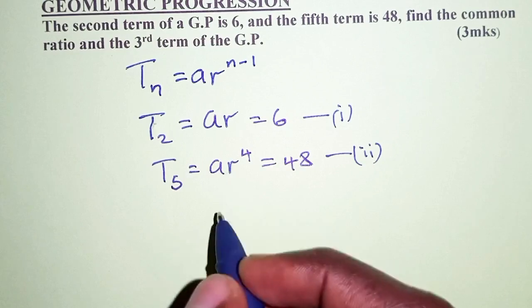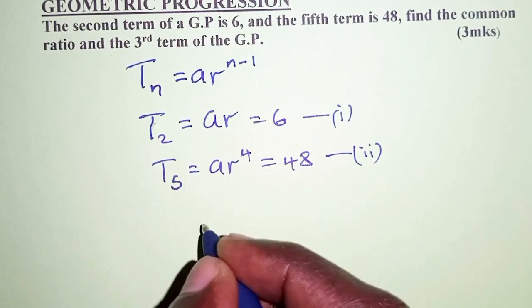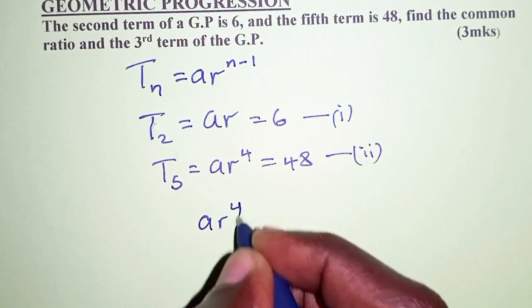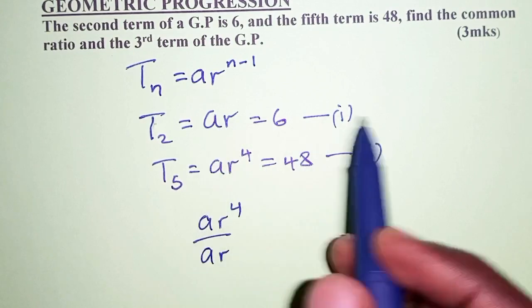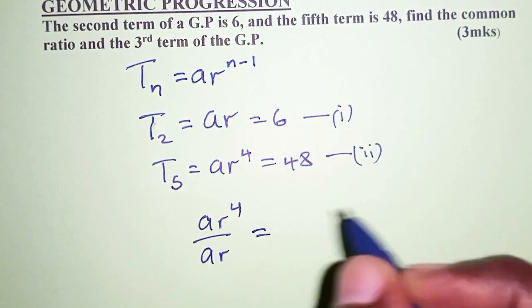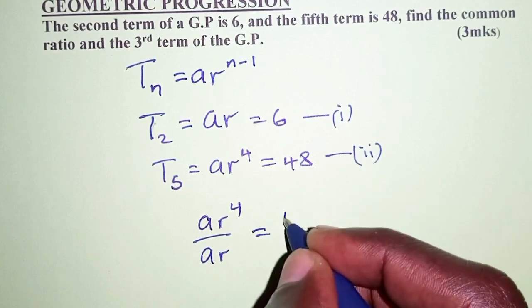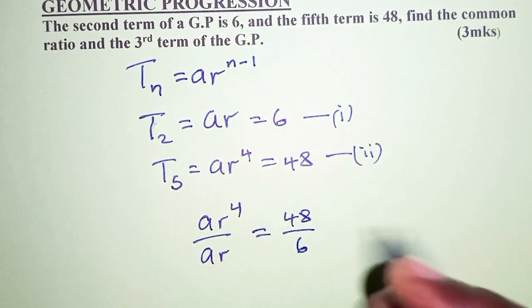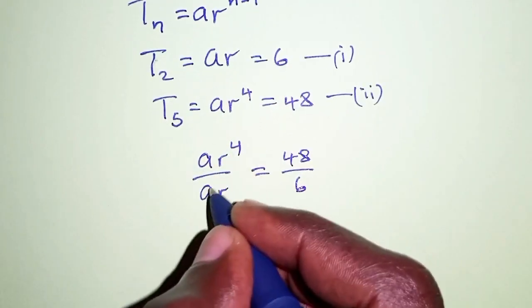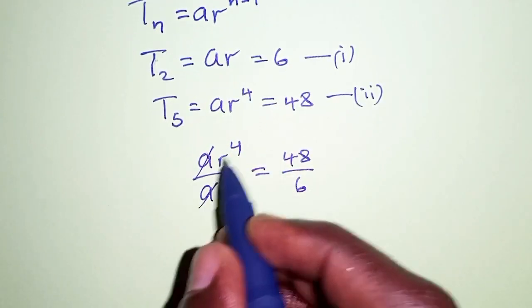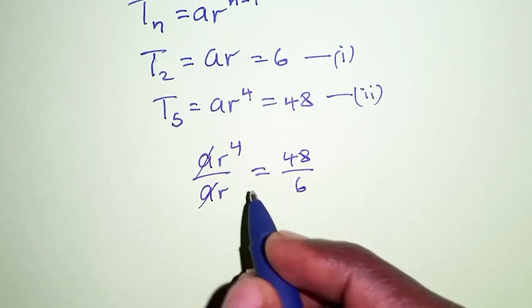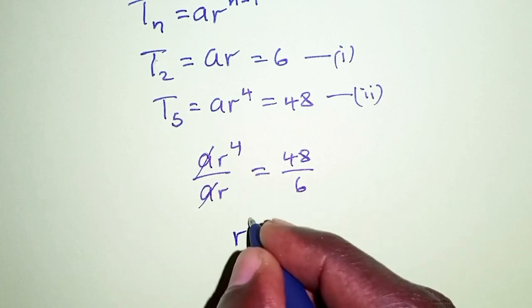And that we achieve by dividing the two equations. So if we have equation 2, which is ar to the power 4, divided by ar for equation 1, then we can equate it to equation 2, 48, over equation 1, 6. So here we can see a will cancel so that we have r to the power 4 divided by r, that is r to the power 3.